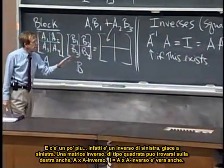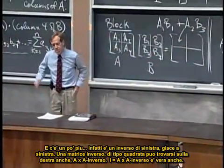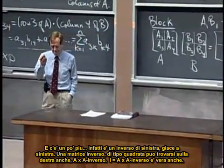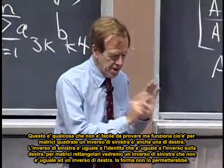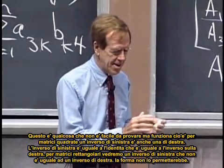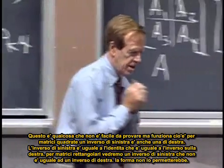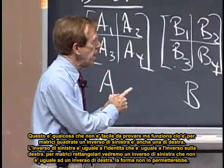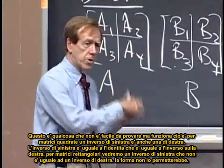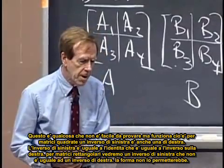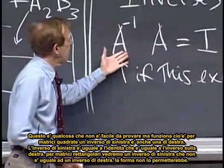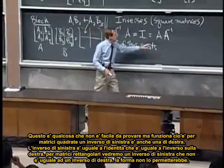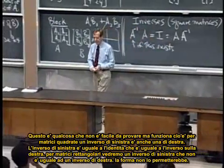In fact this is not easy to prove, but it works. That for square matrices, a left inverse is also a right inverse. If I can find a matrix on the left that gets the identity, then also that matrix on the right will produce that identity.